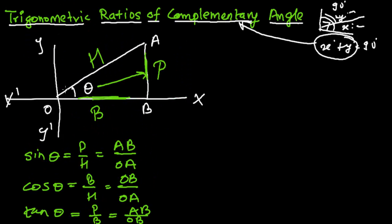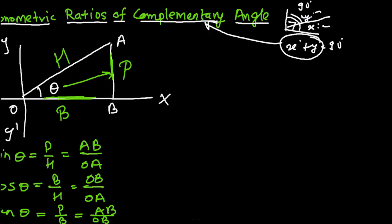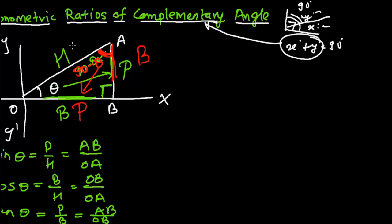Now let's find the complement of this theta angle. Since the triangle has a right angle of 90 degrees, and one angle is theta, the other angle must be 90 minus theta. Taking 90 minus theta as the new reference angle, the opposite side becomes the new perpendicular, and the side where the angle is seated becomes the new base. The hypotenuse always remains the same — it's always the longest side in a right angle triangle regardless of which reference angle we use.